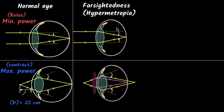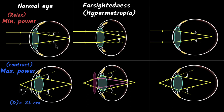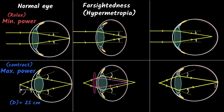Now let's consider the opposite condition: what if your eyeballs are elongated compared to normal? Because the eyeball is elongated, the rays of light will be focused in front of the retina. When looking at close objects where your eyes already have maximum power, you can bring the focus back simply by reducing the converging power — your brain tells the ciliary muscles to relax a little bit. So if your eyeballs are elongated, there's no problem focusing on things that are close by.